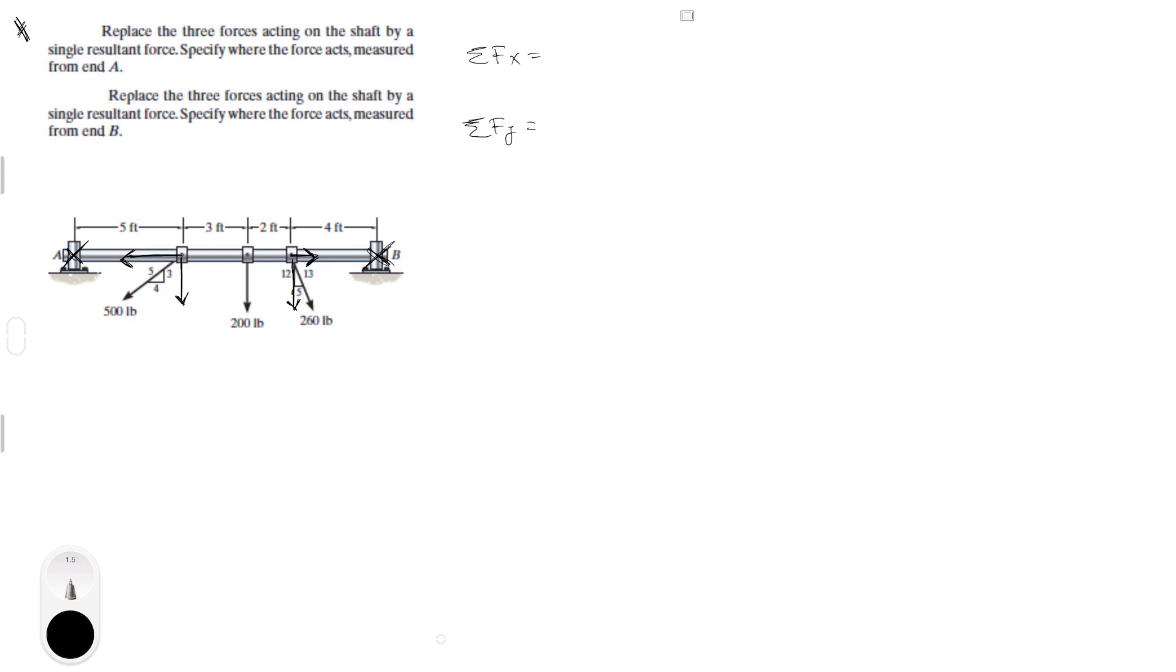So in the Y, we have minus 500, assuming down is negative and up is positive, minus 500 times 3 over 5 for the Y component of this force. Minus 200 because this force is going straight down, minus 260 times 12 over 13. So that gives you negative 740 pounds for sum of the forces in the Y.